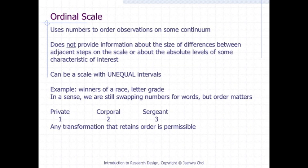The ordinal scale uses numbers to order observations on some continuum. The ordinal scale data does not provide information about the size of differences between adjacent steps on the scale. An example of this measurement scale would be the winners of a race.